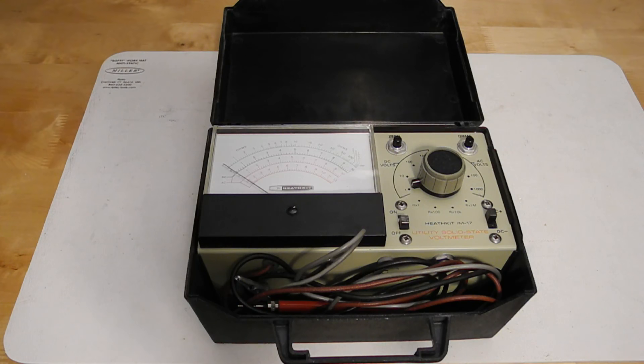The IM17 can measure AC and DC voltage and resistance. DC voltage ranges are 1, 10, 100 and 1000 volts. AC and resistance ranges are times 1, times 100, times 10k and times 1 meg.